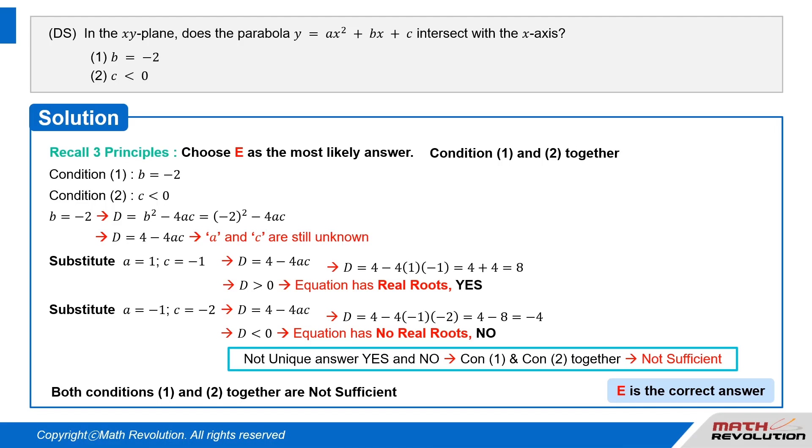When there are three variables in the question, it is most likely that e would be the answer. Therefore, always check both the conditions together to save time. Answer, e. I did all the calculations here, but you can just choose e as the answer in the actual exam. You do not have to do the calculations during the exam.